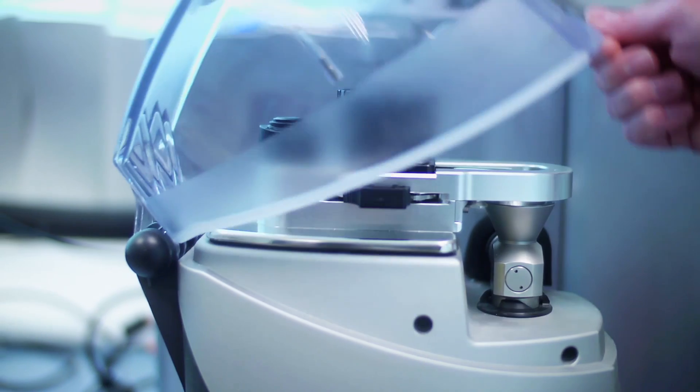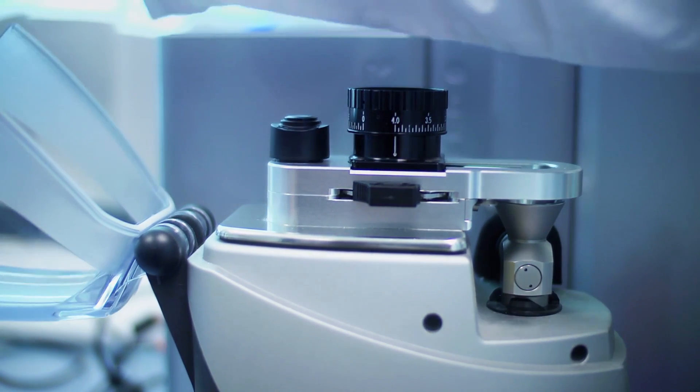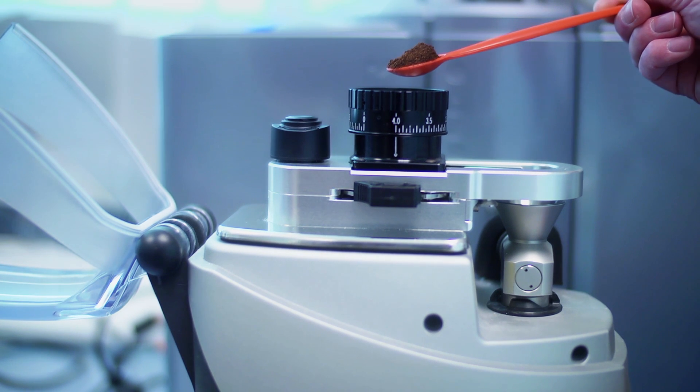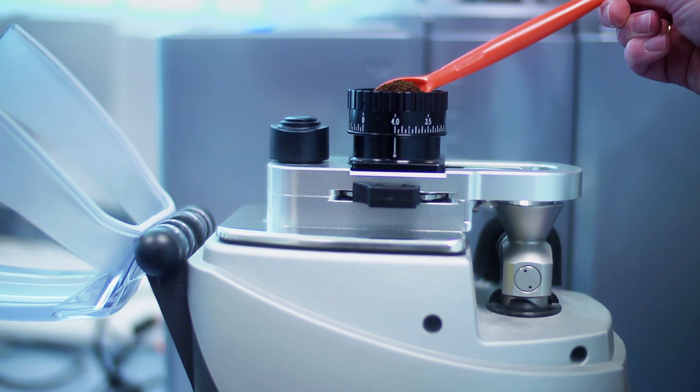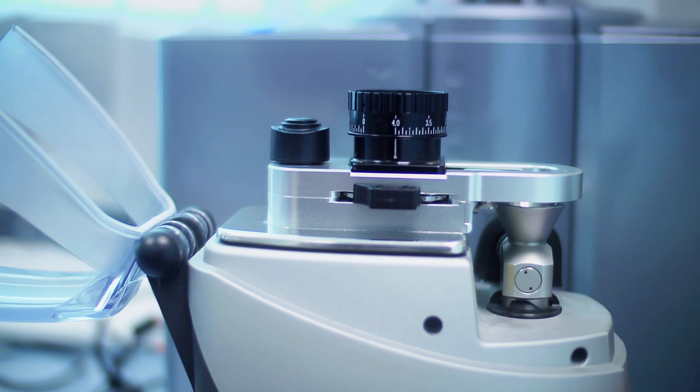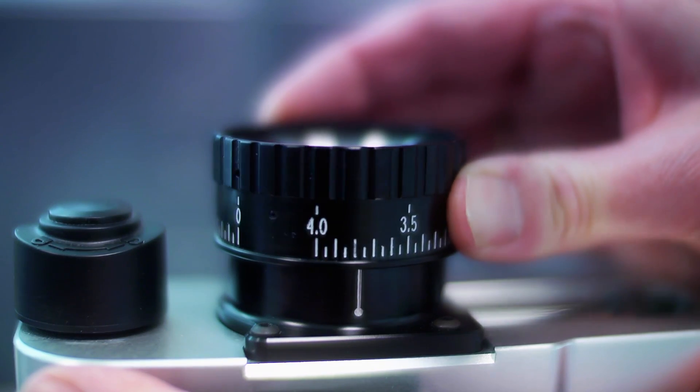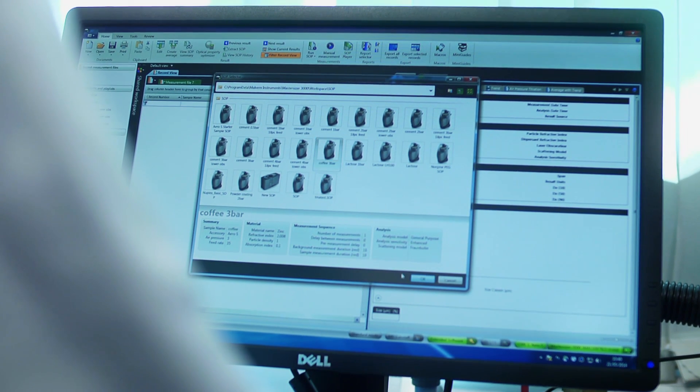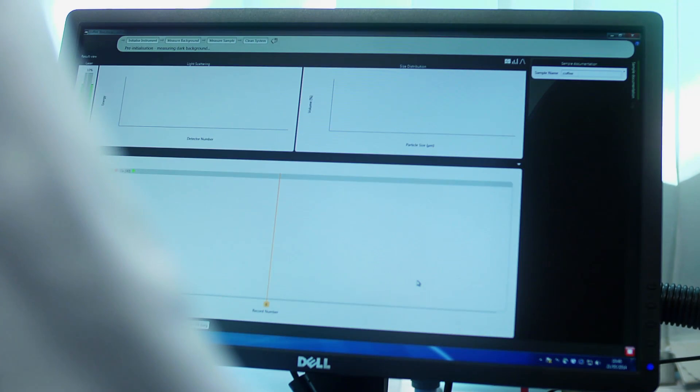Dry measurements offer the ability to quickly measure larger volumes of sample. The sample tray and hopper can be configured to control the flow of different types of material. Other sample trays are available to handle smaller sample volumes. As with liquid dispersion measurements, the Master Sizer 3000 measurement manager is used to guide you through the dry measurement process.